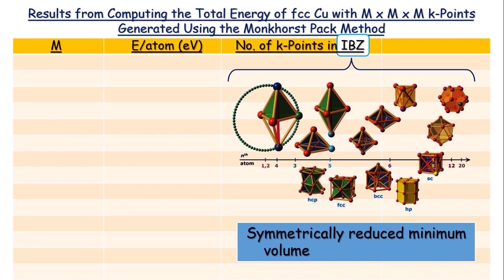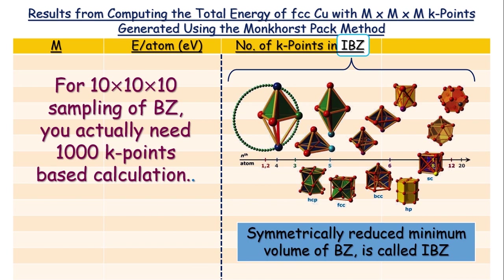Now, just to give you an idea of how useful is the use of this IBZ in our calculations is, for a 10 cross 10 cross 10 sampling of Brillouin zone, you actually need to perform a 1000 K-points based calculation. Using IBZ, you only need to take 35 K-points, which is actually amazing, isn't it?